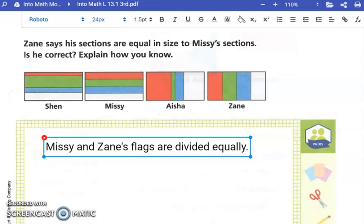We're going to say that Missy and Zane's flags are divided equally. If I had cut those flags and colored them in construction paper and cut them apart, I could lay Missy's pieces on top of Zane's flag, right? And they would fill the same area. That's how we can say that they are divided equally.